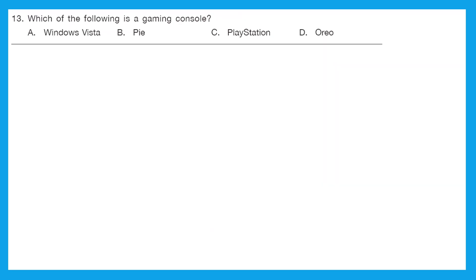Question 13: which of the following is a gaming console? Is it Windows Vista? Is it Pi? Is it PlayStation or Oreo? If any one of you really plays video games, then you must definitely know this. It is option C, PlayStation.